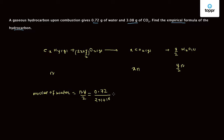This equals 0.72 upon 18, which is 0.04. Therefore, NY is equal to 0.08.